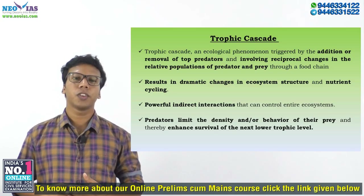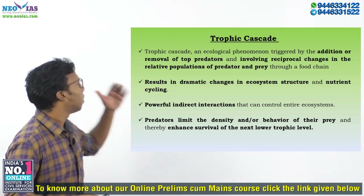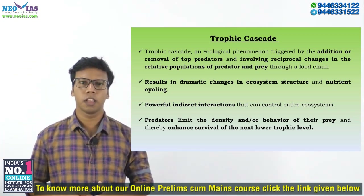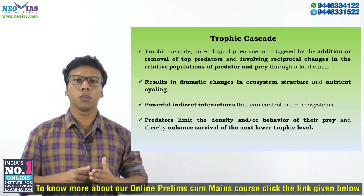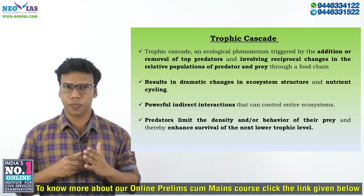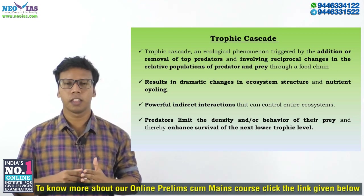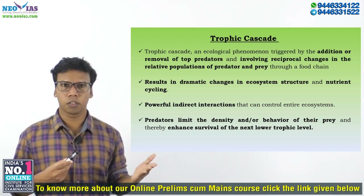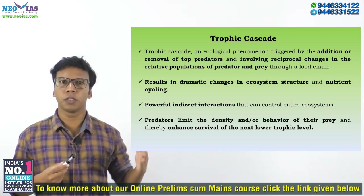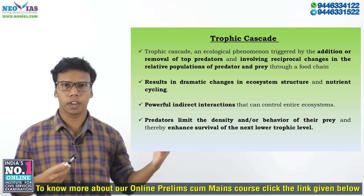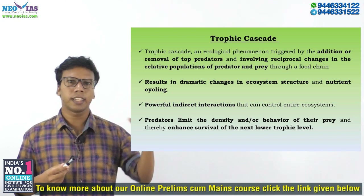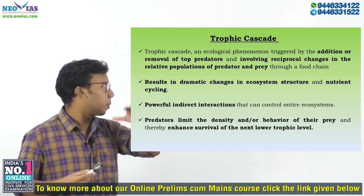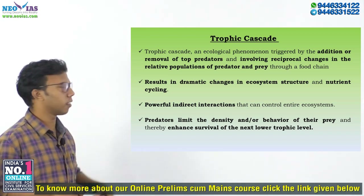Hi friends, today we are going to discuss about Trophic Cascade. I hope you know about what is Trophic Level. Trophic Level is the position of a species or an organism in the food chain. So, with an example of a food chain, I will explain this Trophic Cascade.